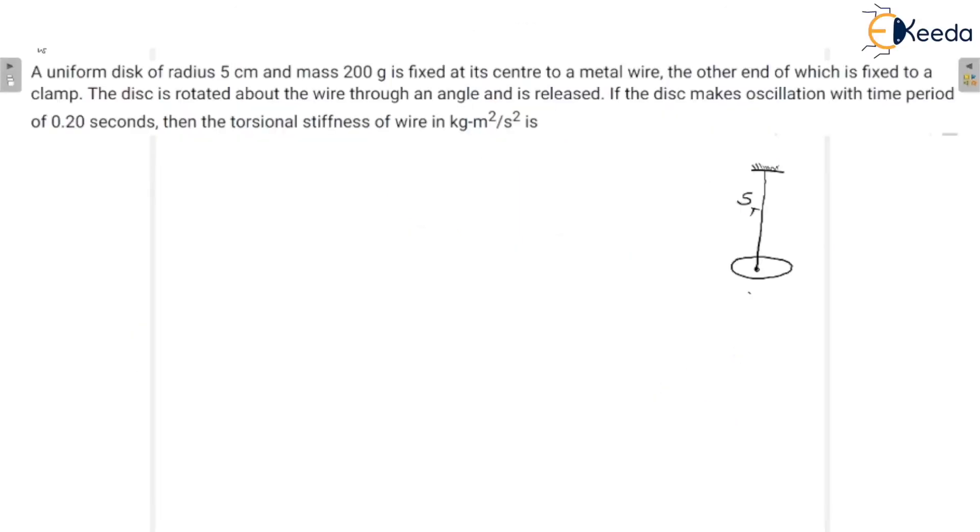A uniform disc of radius 5 cm and mass 200 g is fixed at its center to a metal wire. The other end is fixed to a clamp. The disc is rotated about the wire through an angle and is released. If the disc makes an oscillation with a time period of 0.20 seconds, then we have to calculate the torsional stiffness of the wire in kg·m² per second².